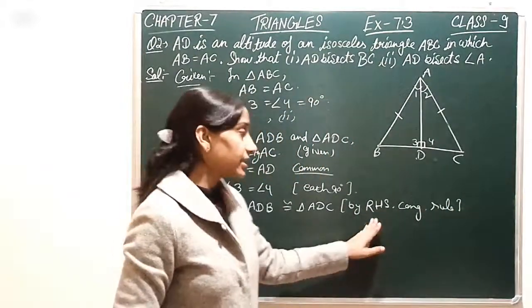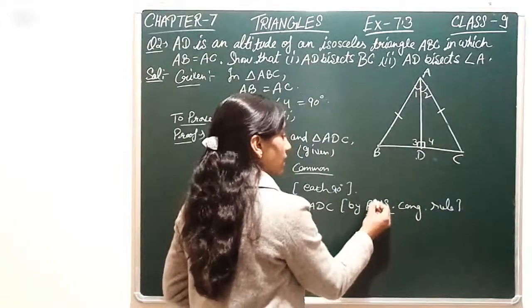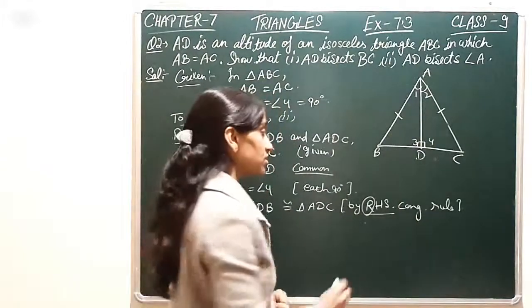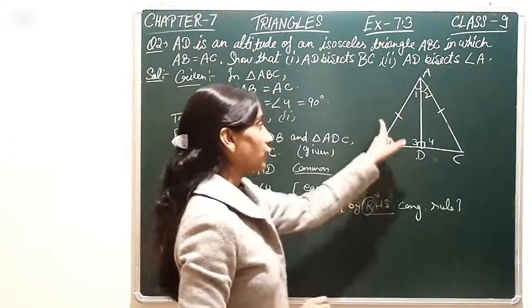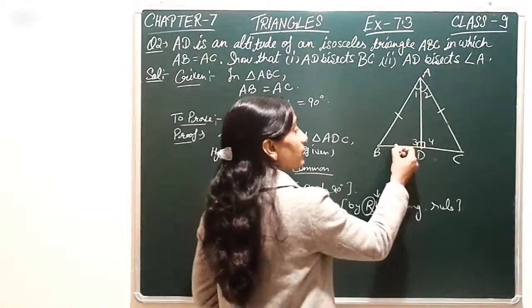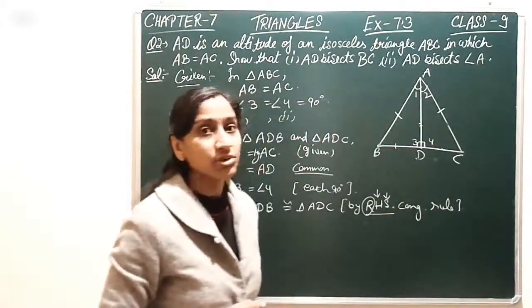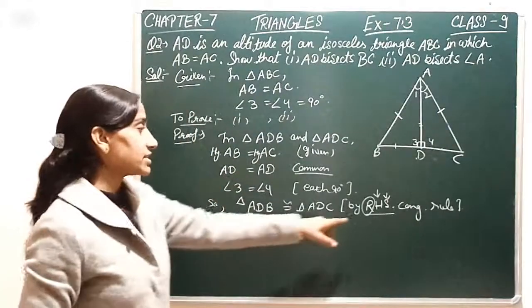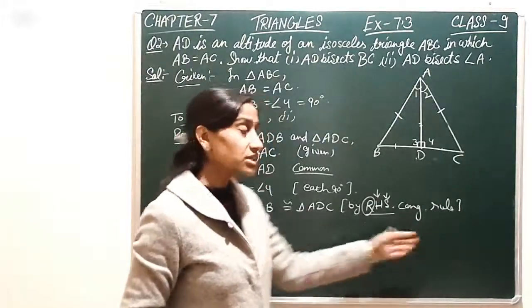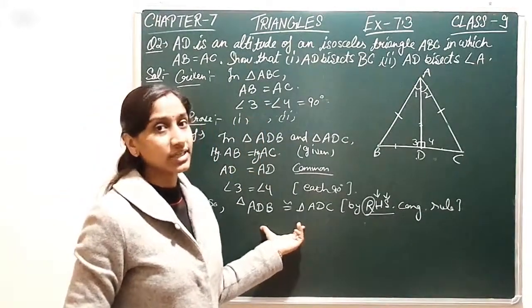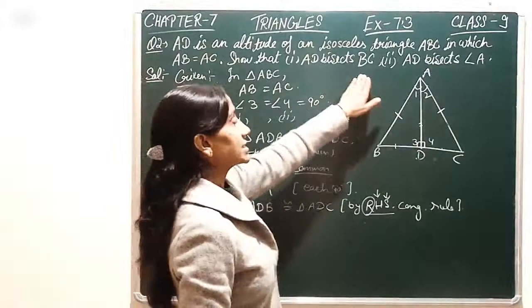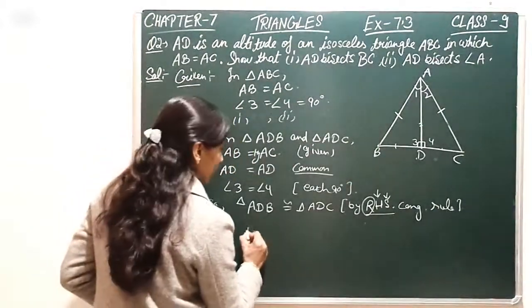RHS congruence rule is that if in two triangles R is right angle, that means both your triangles should be right angle triangles, after that the hypotenuse should be equal, and after that comes the side. So in side you can use either the base as equal or prove the perpendicular as equal. So if you have base or perpendicular, any one side equal, then you can prove these two triangles congruent by RHS congruence.